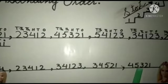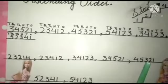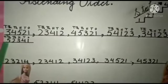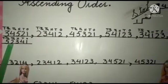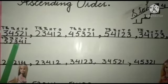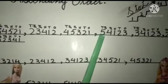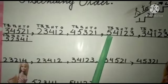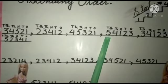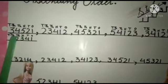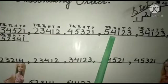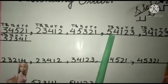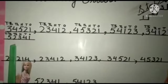Then we have again two numbers of the same values: 52,341 and 54,123. You can see the number at the ten-thousands place is the same — 5 and 5. Now compare the thousands place: 4 and 2. So 4 is greater and 2 is smaller.